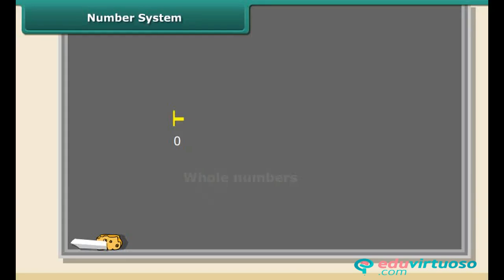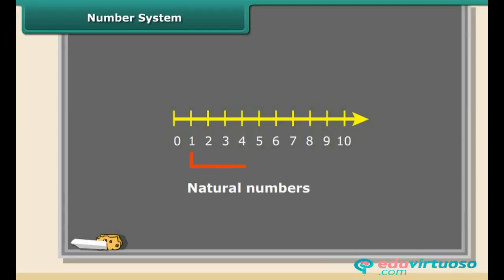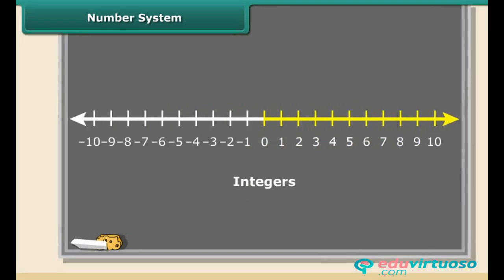We will also find rational numbers between any two given rational numbers. Whole numbers are simply the numbers 0, 1, 2, 3, 4, 5, and so on — there are no fractions. Natural numbers are the positive whole numbers except zero. Integers are like whole numbers but they also include negative numbers, so integers can be positive, negative, and zero.